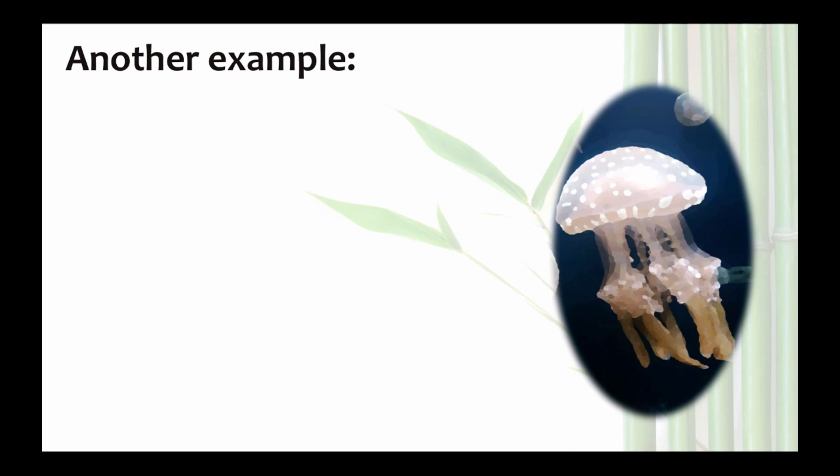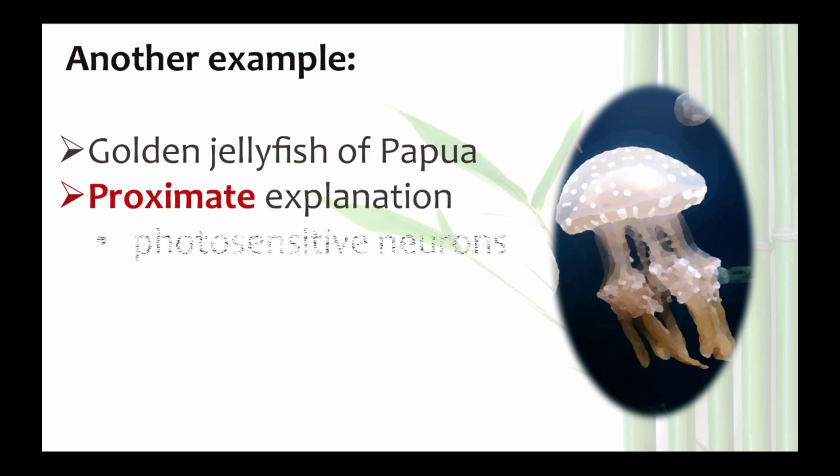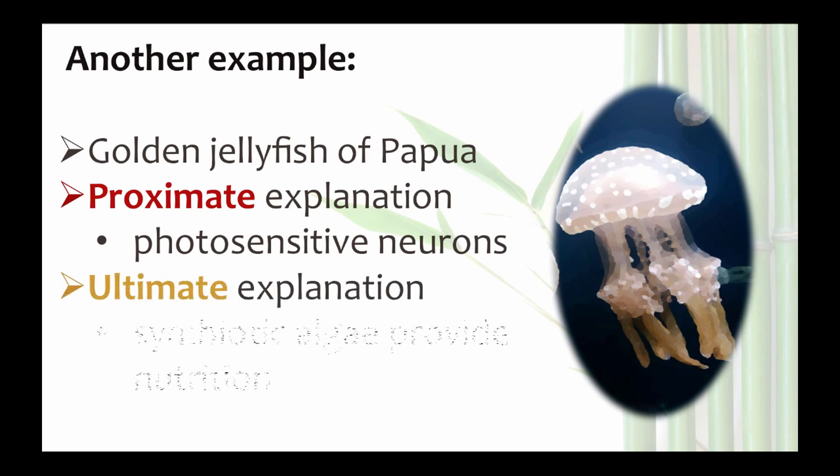Here's another example. Golden jellies migrate across the lake each day. They are found in the west in the morning and evenings, and in the east side during the day. Again, we can consider the proximate explanation. Photosensitive neurons in the nervous system allow swimming behavior to be coordinated with light. The ultimate explanation is that symbiotic algae provide nutrition to the jellyfish, and that is dependent on photosynthesis.